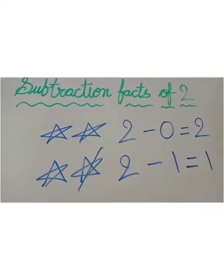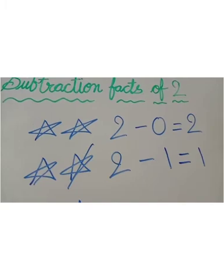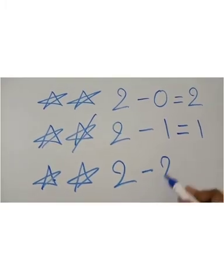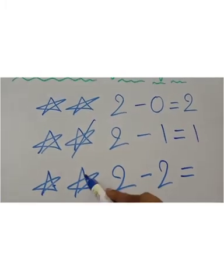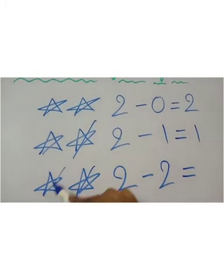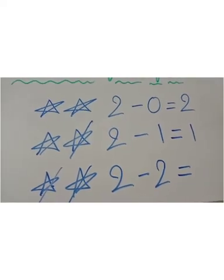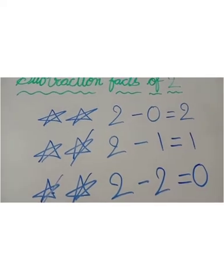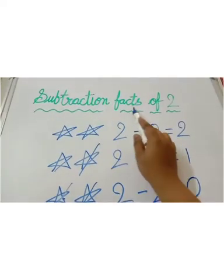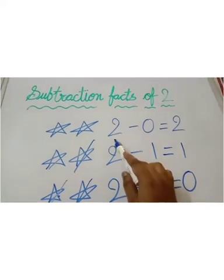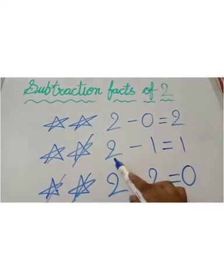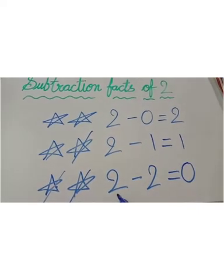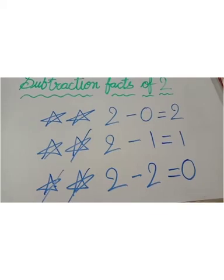And if I have 2 stars and I gave you 2 stars — both — then I have now 0 stars. So subtraction facts of 2: 2 minus 0 is equal to 2, 2 minus 1 is equal to 1, and 2 minus 2 is equal to 0.